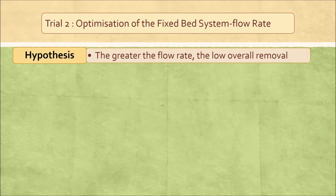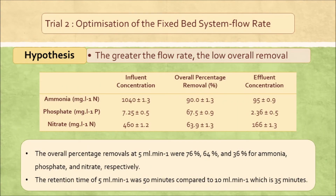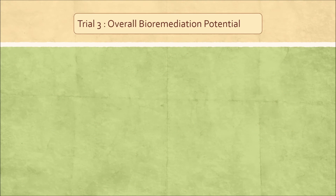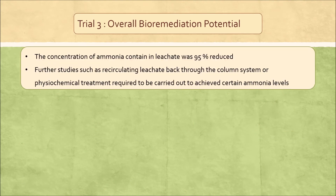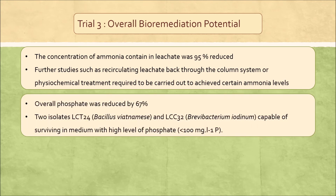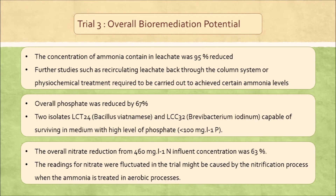Based on the table, the overall percentage removals at 5 ml per minute were 76% for ammonia, 64% for phosphate, and 36% for nitrate. The retention time at 5 ml per minute was 15 minutes, making it the optimum trial compared to 10 ml per minute which takes 35 minutes. The third trial shows the overall bioremediation potential: the concentration of ammonia in leachate reduced by 95%, phosphate concentration was reduced by 67%, and overall nitrate reduction comprised 63%.